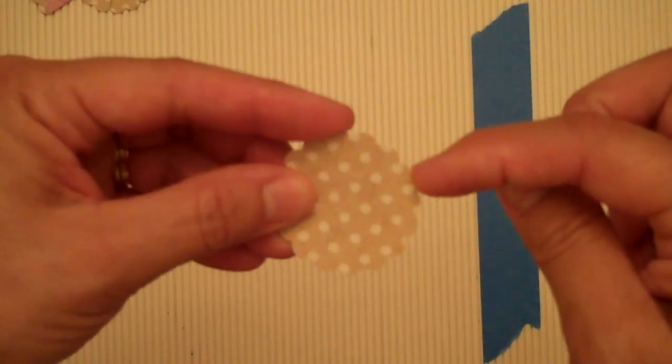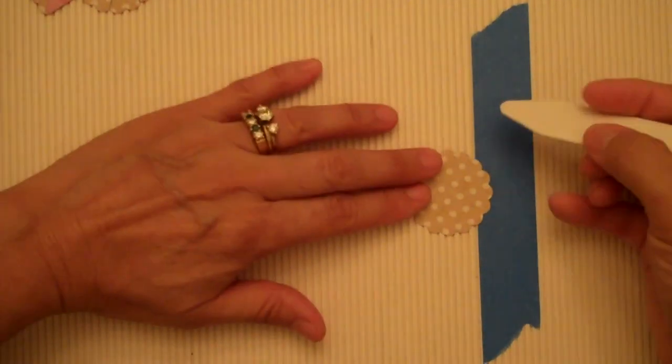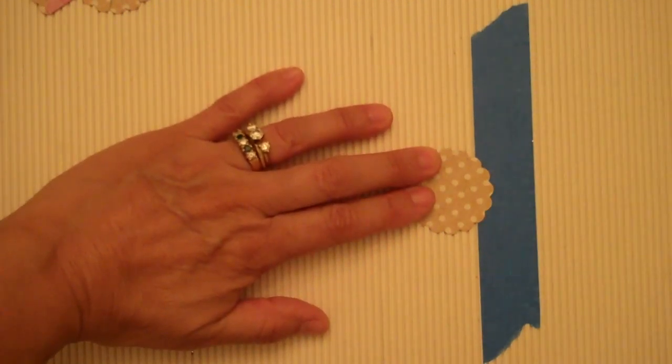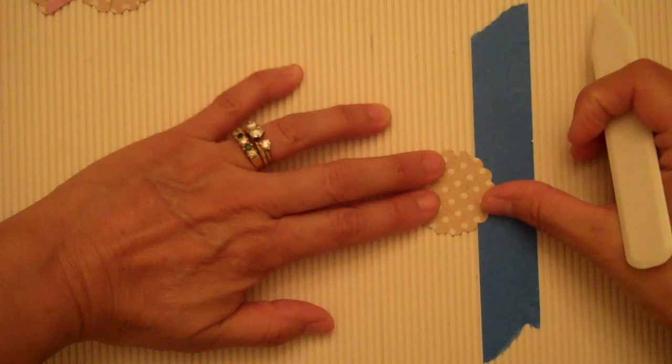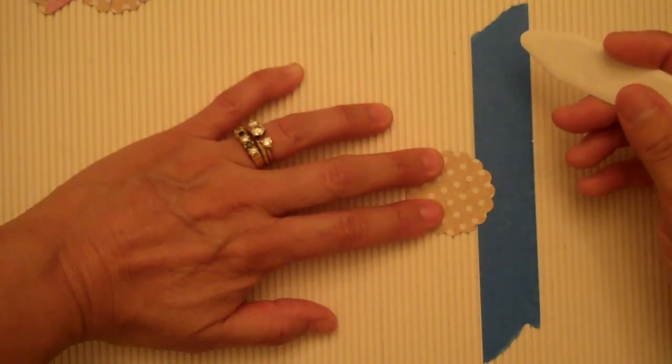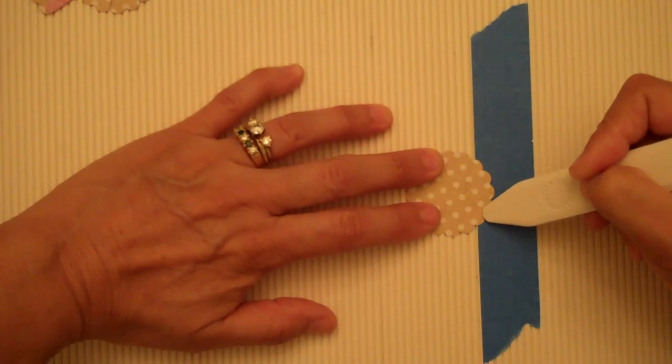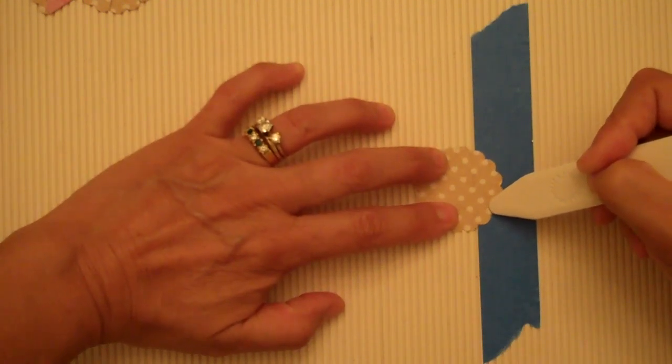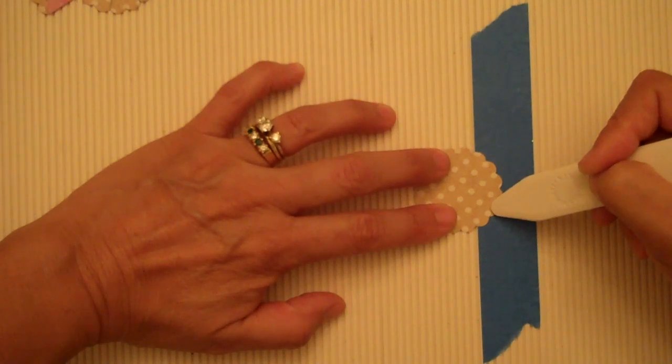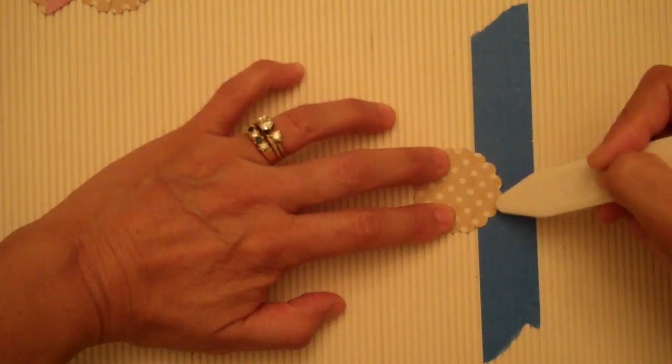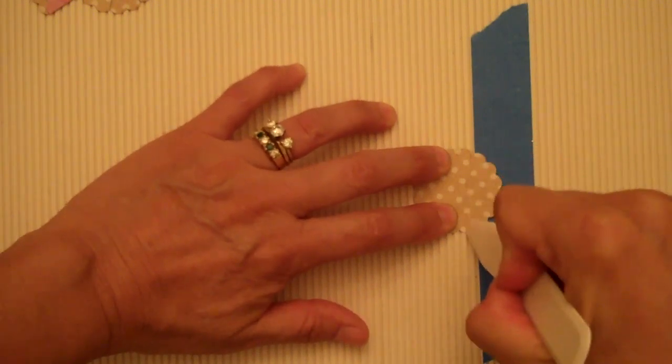The first thing you need to do is count six scallops and make a score line. I use a piece of tape so that I can see that my line is going straight across the scallop. So I count one, two, three, four, five, and six. Make sure the top and the bottom match up before I score it. Then you score that.